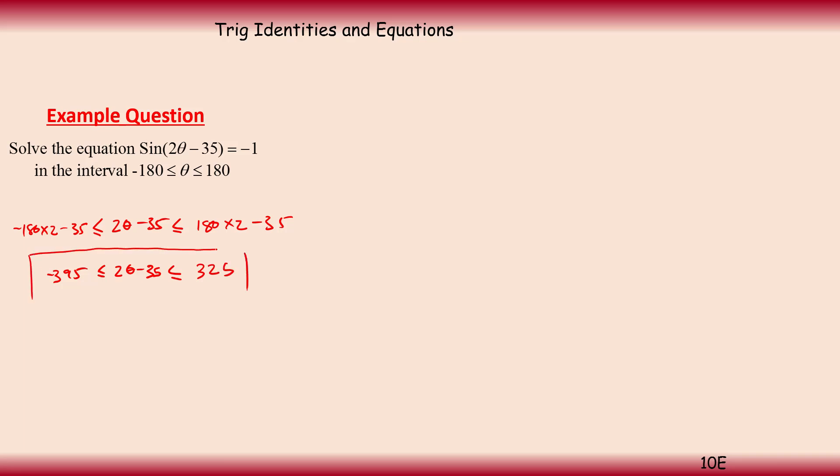So we've got to work out the range on which we're working first. Then we can know where our solutions are going to lie. So now we can work out our sine 2θ minus 35 is equal to minus 1 as we've always done. That means that 2θ minus 35 is going to be equal to the inverse sine or sine to the minus 1 of minus 1. And if I work that on my calculator I should get 270 degrees. So that's 2θ minus 35.